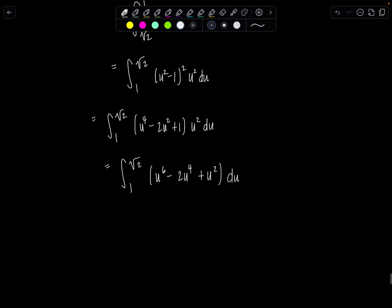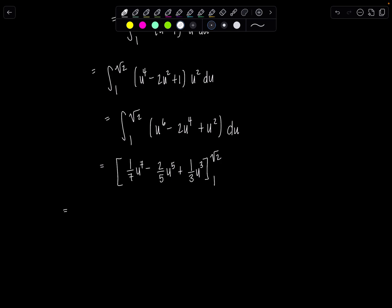Now take the antiderivative term by term. So 1/7 u to the seventh minus 2/5 u to the fifth plus 1/3 u cubed, evaluated from 1 to √2.